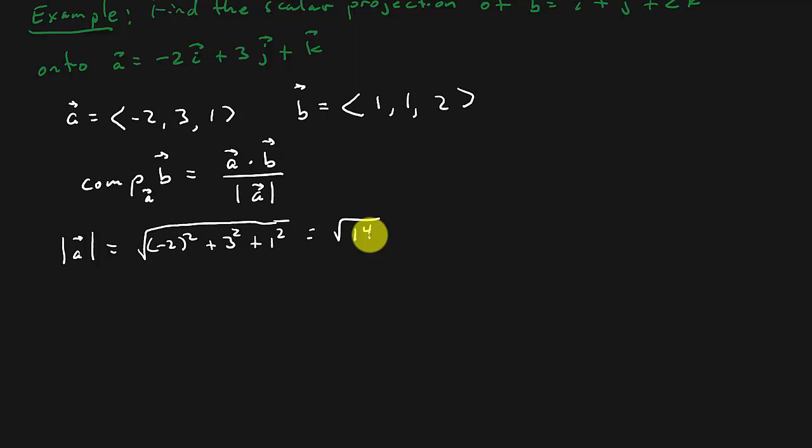Now let's find the dot product. So the dot product of A and B is equal to, remember the dot product, it's the negative 2 times 1, negative 2 times 1, plus 3 times 1, plus 3 times 1, plus 1 times 2, plus 1 times 2.